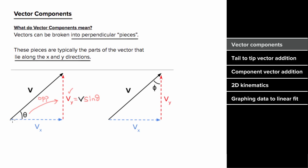And since this horizontal component is adjacent to that angle, we write the horizontal component as the magnitude of the total vector times cosine of that angle.